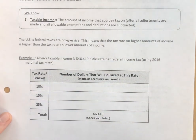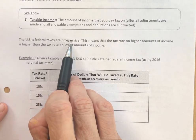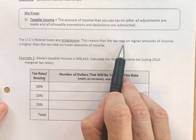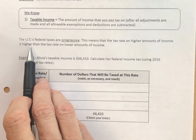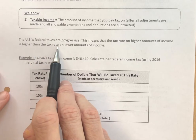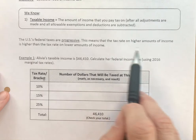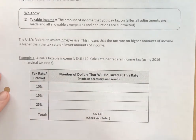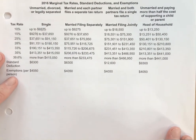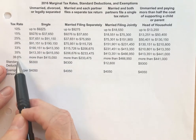Our tax system is complicated. Our federal tax system is progressive, which means the tax rate on higher amounts of income is taxed at a higher rate than the tax rate on lower amounts of income. The more dollars you make, those higher dollars have a higher tax rate than your lower dollars. We end up with what are called tax brackets. In 2016, there were seven tax brackets.